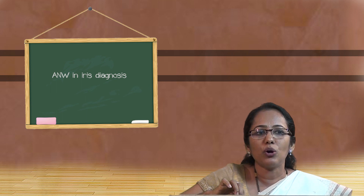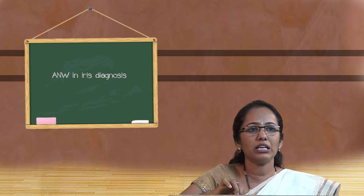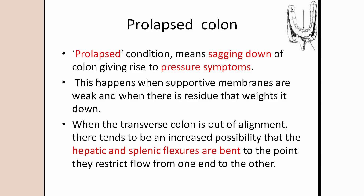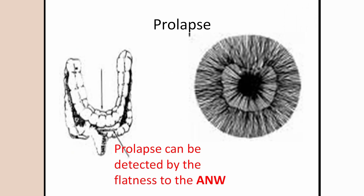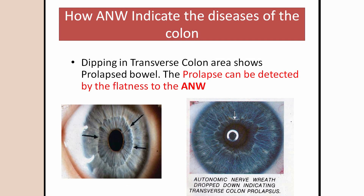Every organ is reflex-related to the autonomic nerve wreath, and any changes in it can affect the size and shape of the wreath. We will see what happens during prolapse of the colon — a condition where the colon sags down, giving rise to pressure symptoms. If the transverse colon is sagging down, it can exert pressure on different structures in the abdomen. In the iris, you can observe that the transverse colon, which usually lies straight, is sagged down — the top part of the autonomic nerve wreath steps down towards the pupillary border, indicating something is wrong with the transverse colon or that there is a prolapse.